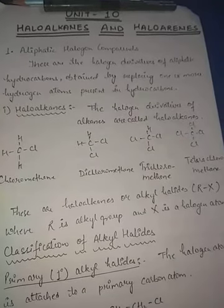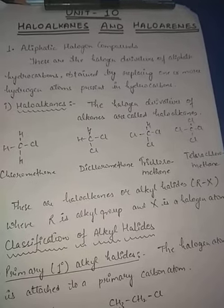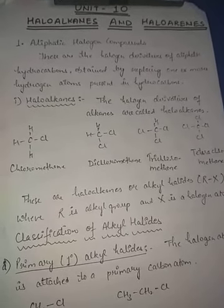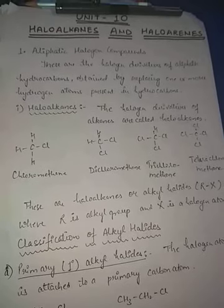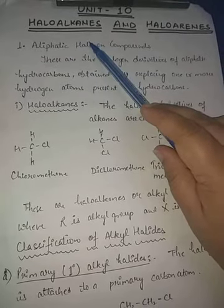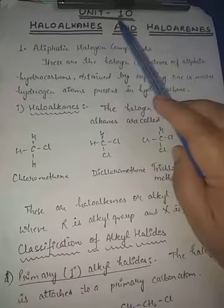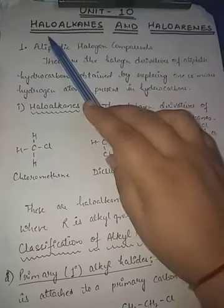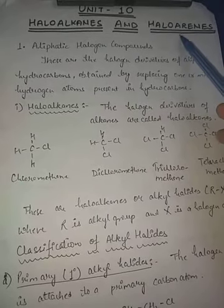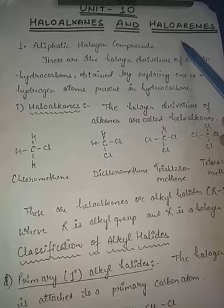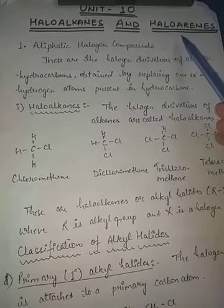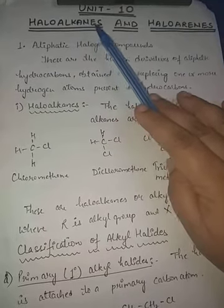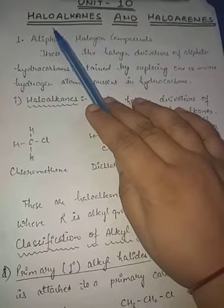Hello students, today we will start with Chapter 10 - Haloalkanes and Haloarenes. The first compound we will study is aliphatic halogen compounds. Haloalkanes means open chain structures having one or more halogen atoms, and haloarenes means a benzene ring is there with a halogen attached - either directly to the benzene ring or to a side chain.